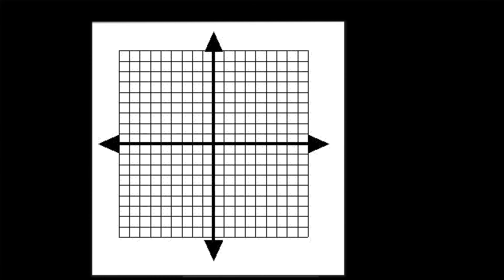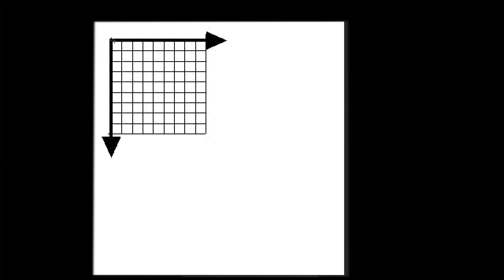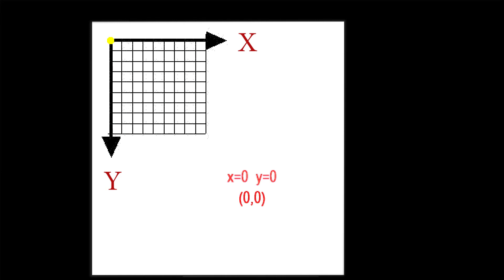You may remember from math class the coordinate system starting with 0 in the center, where the horizontal line is the x-axis and the vertical line is the y-axis. In GameMaker it's a little bit different — GameMaker starts with the zero-zero point in the upper left-hand corner. So if we draw a yellow dot on that point, x would equal zero and y would equal zero, written as (0, 0).